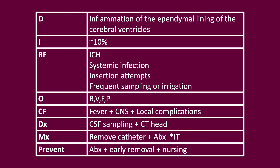Ventriculitis from EVD placement is a common complication occurring in approximately 10% of patients. It is defined as inflammation of the ependymal lining of the cerebral ventricles, commonly due to infection, which may be bacterial, viral, fungal or parasitic. Risk factors include intracerebral haemorrhage, systemic infections, multiple insertion attempts, and frequent sampling or irrigation. Clinical features include fever, CNS symptoms such as headache and low GCS, and local complications including erythema, tenderness and discharge. Diagnosis involves CSF sampling — which can be difficult as initial CSF results may not be clearly abnormal — and CT findings which may show debris within the ventricles, enhancement and ventricular dilation. The catheter should be removed and antibiotics given.